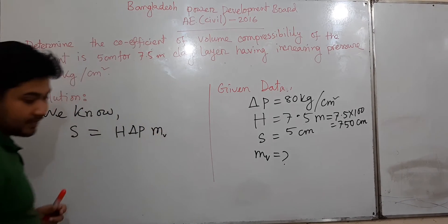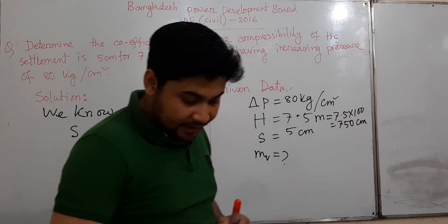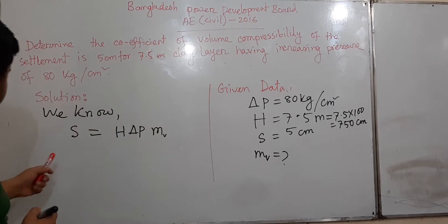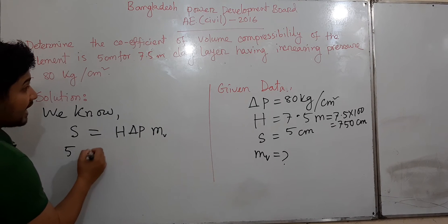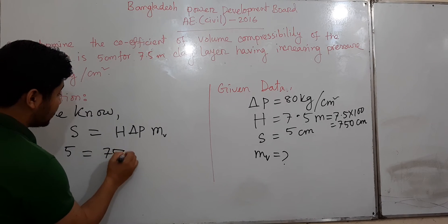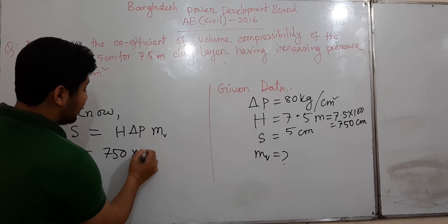Using the formula S equals m_v times H times ΔP, the settlement value is 5, H value is 75, and ΔP value is 80.